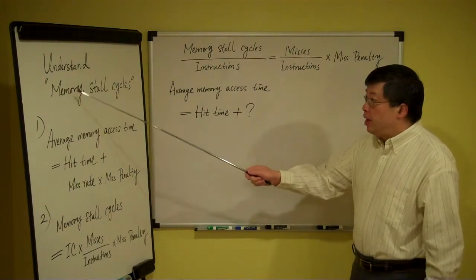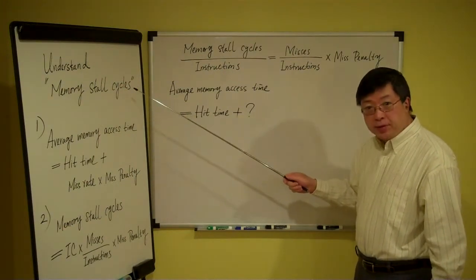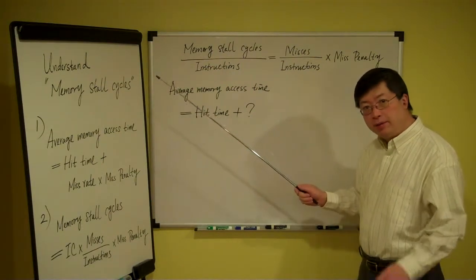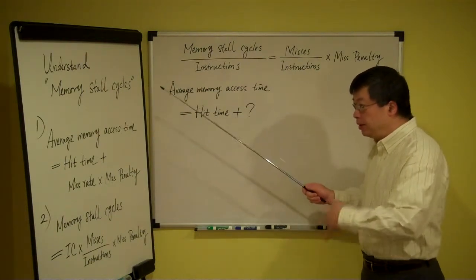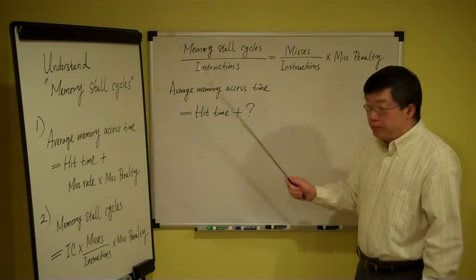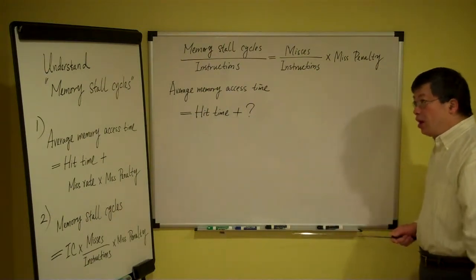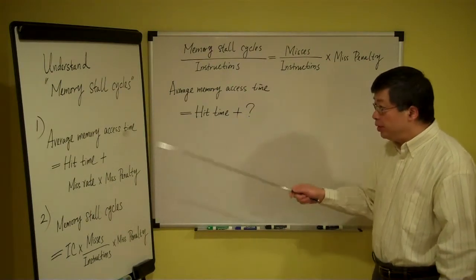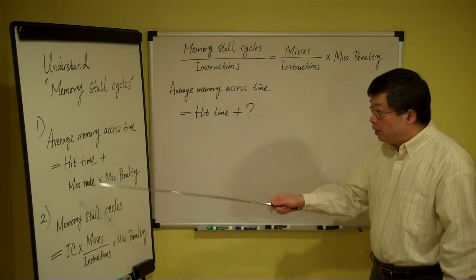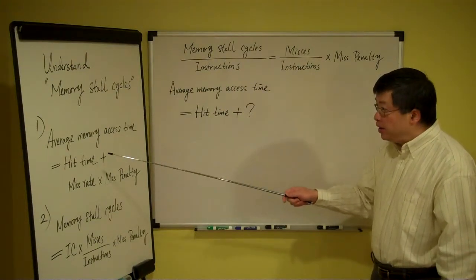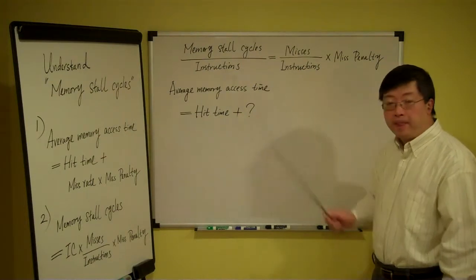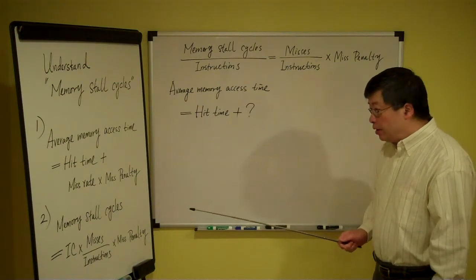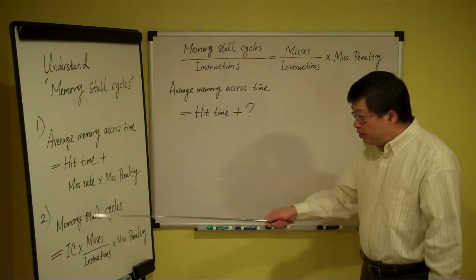Let us understand memory storage cycles. In class when we discussed about this topic there were some problems, so here I want to explain that concept clearly. We start based on the fundamental formula for cache memory, calculating average memory access time. Based on this formula, let us look at another formula: memory storage cycles.